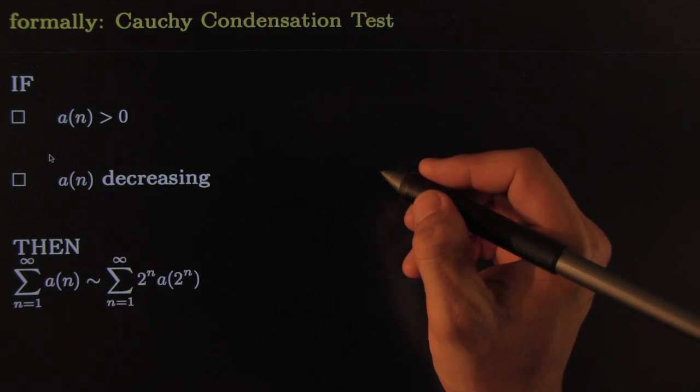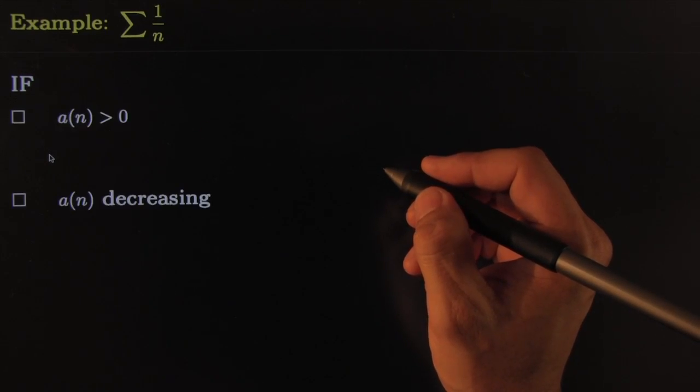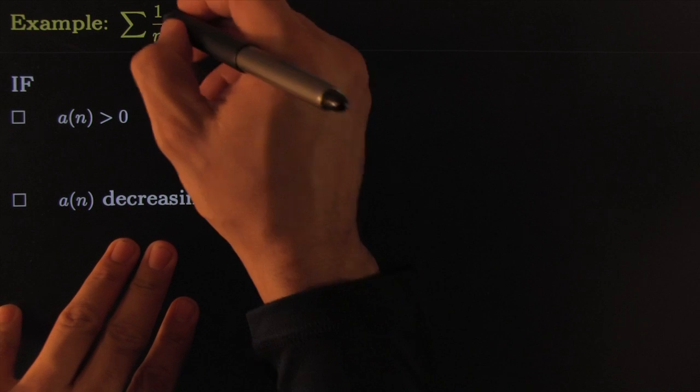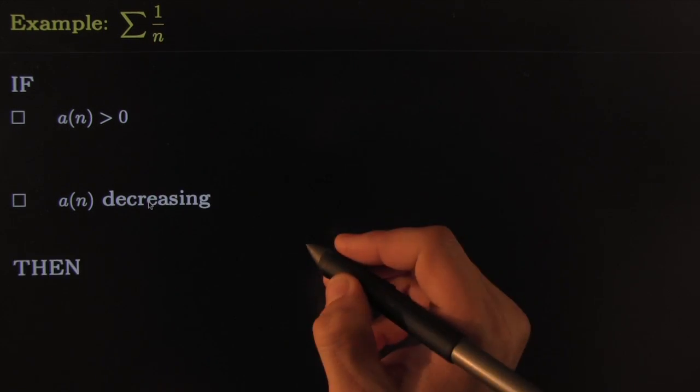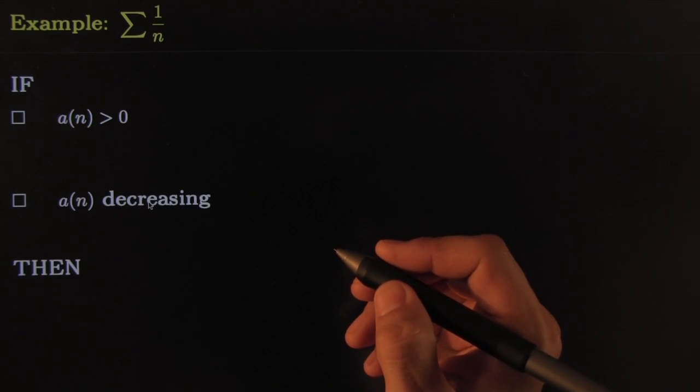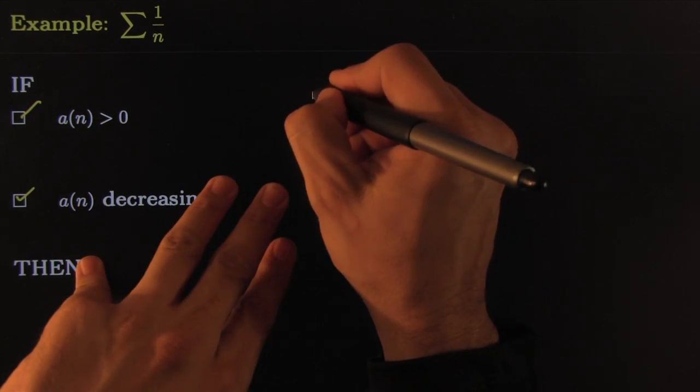Let me check out these examples. So the original one, harmonic series, clearly they're positive and decreasing. So therefore it behaves just like its condensed version. Let's look at this condensed version.